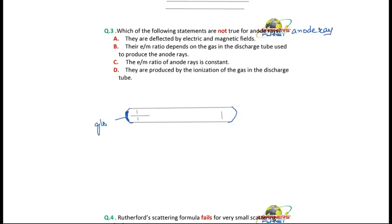And they produced a glow over here. So this was the glow which was produced. Now, why are these anode rays produced? Because there are gas molecules over here.